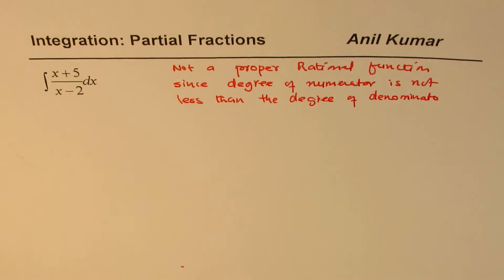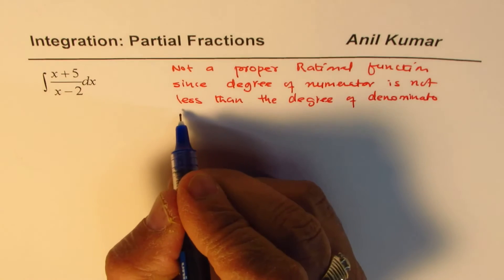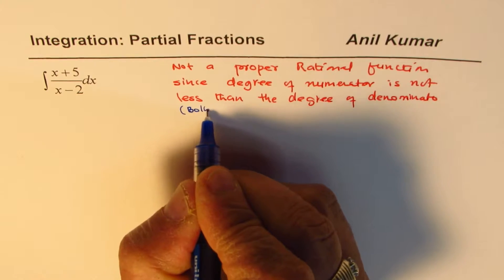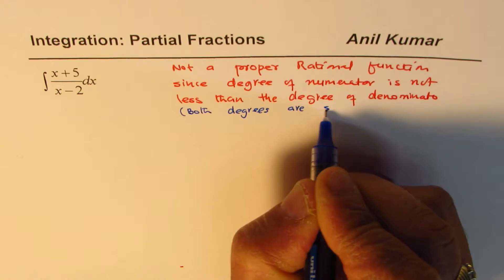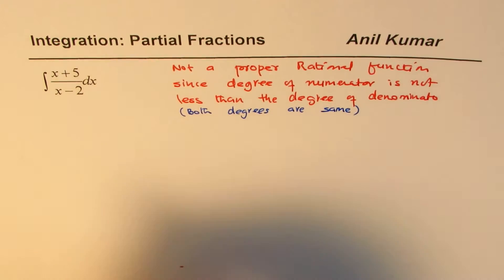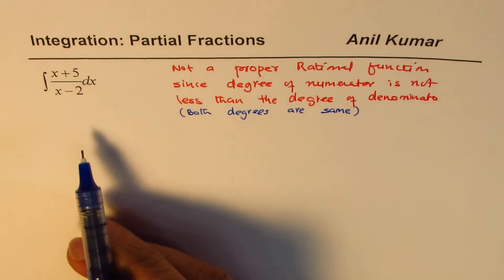In fact, in this case, both are equal. So here what we have, we have a special case where both degrees are same. In this particular case.